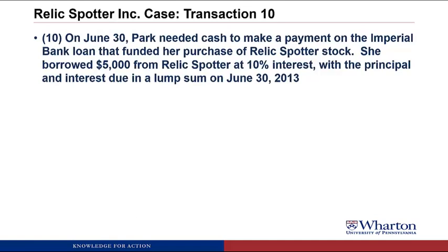Transaction 10. On June 30th, Park needed cash to make a payment on the Imperial Bank loan that funded her purchase of Relic Spotter stock. She borrowed $5,000 from Relic Spotter at 10% interest, with the principal and interest due in a lump sum on June 30th, 2013.